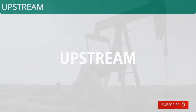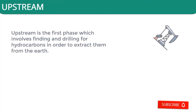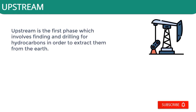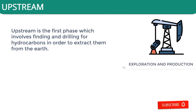Upstream is the first phase that involves finding and drilling for hydrocarbons in order to extract them. It involves exploration for potential oil and gas fields, drilling of exploratory wells, and operating the wells to recover and bring crude oil or natural gas to the surface. Upstream is also known as the exploration and production stage.